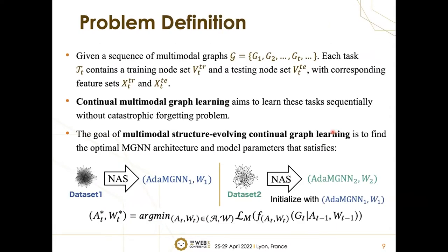Now I want to describe our problem definition. Given a sequence of multimodal graphs, each task in each graph can correspond to a task key. Continual multimodal graph learning aims to learn its tasks sequentially without catastrophic forgetting. The goal of MSCGL is to find the optimal MGM architecture and model parameters satisfying this equation, where A*_T is the best architecture and W*_T is the trained model parameters under architecture A for task T. The search spaces on model architectures and parameters are denoted as A and W respectively.